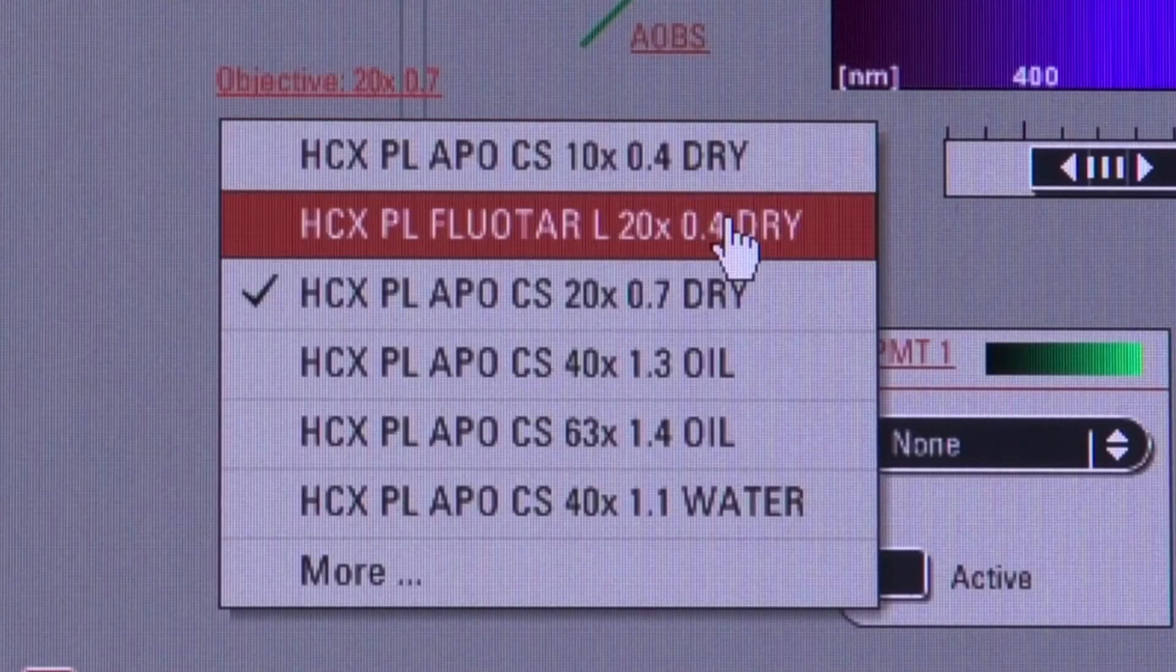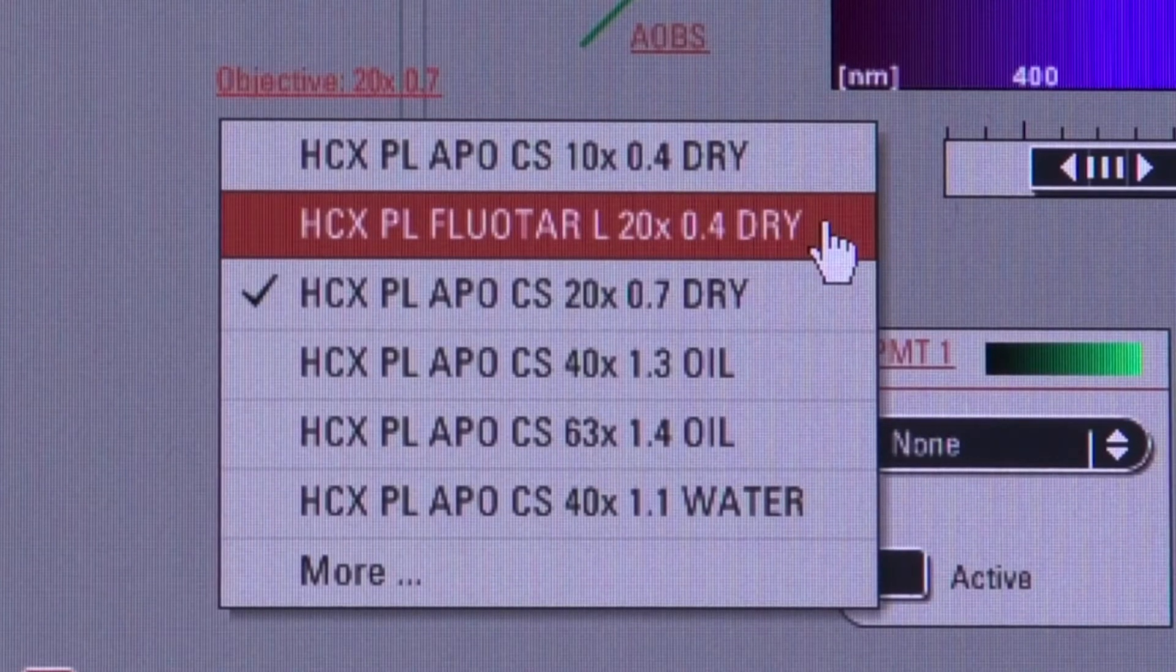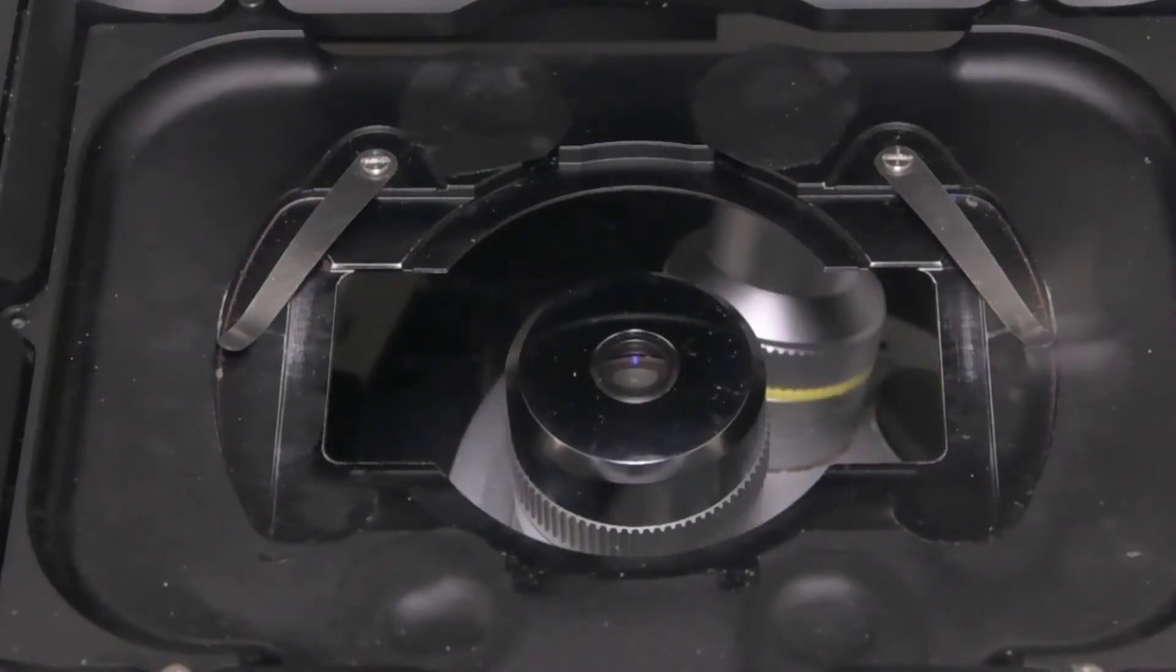Back in the objectives list, the 20X 0.4 NA lens is designed for long working distances. We don't use it often, but if you click on it, it also rotates into place. The 20X 0.4 looks like this. You can see that it is flat on top and sits deep inside. That's the 10X with the yellow band behind it.